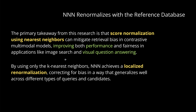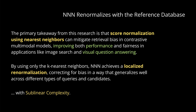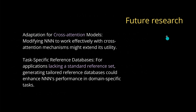The primary takeaway is that score normalization using only k nearest neighbors can really mitigate retrieval bias in contrastive multimodal models, improving both performance and fairness in applications like image search and visual question answering. NNN achieves localized renormalization, correcting for bias in a way that generalizes well across different types of queries and candidates. This enables sub-linear computational complexity because it does not run through the complete database — it uses a localized renormalization methodology. A simple idea, easy implementation, but with beautiful results.